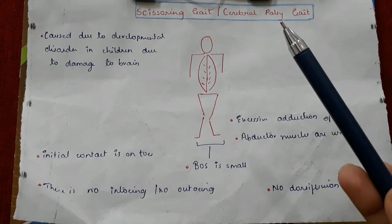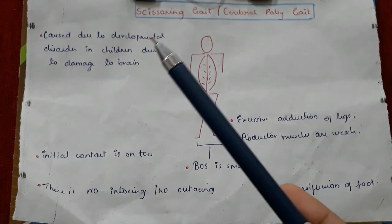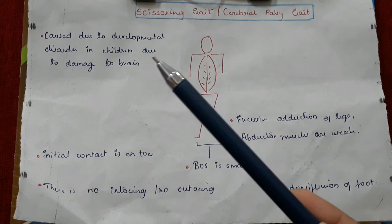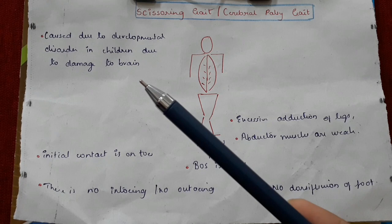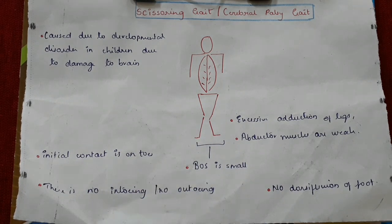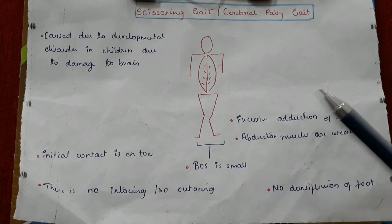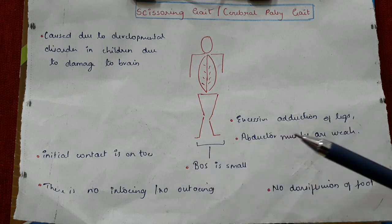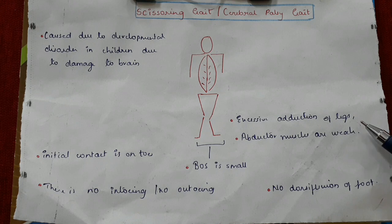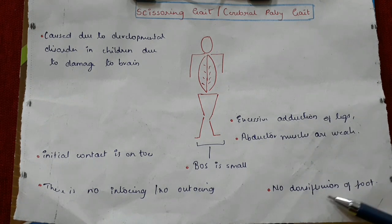Scissoring gait or the cerebral palsy gait is caused due to a developmental disorder in children due to brain damage. Initial contact is on toes. There is no in-toeing or out-toeing. Base of support is small. Excessive adduction of the legs is seen and abductor muscles are weak. No dorsiflexion of the foot is present.